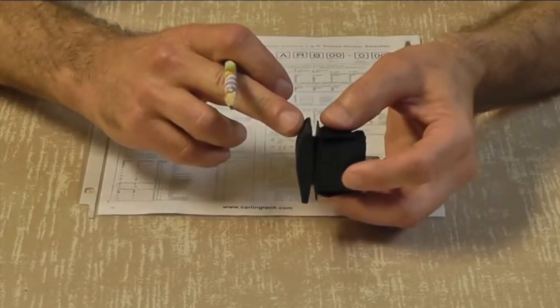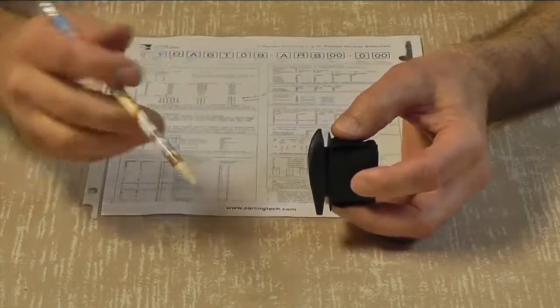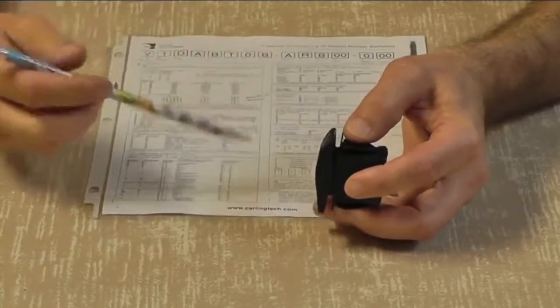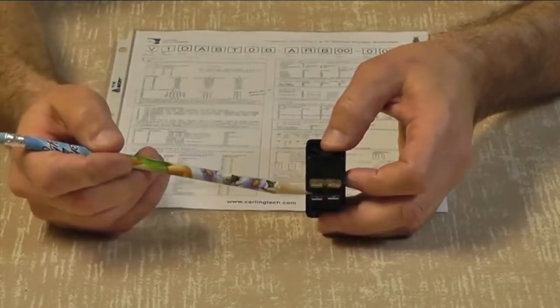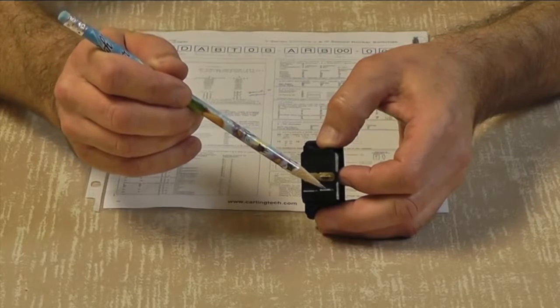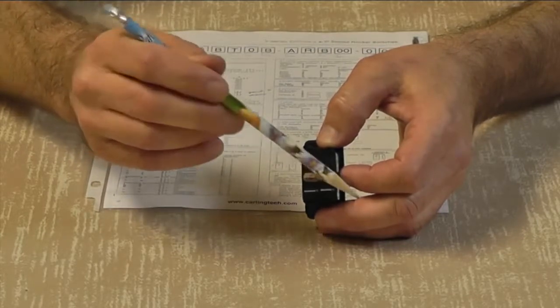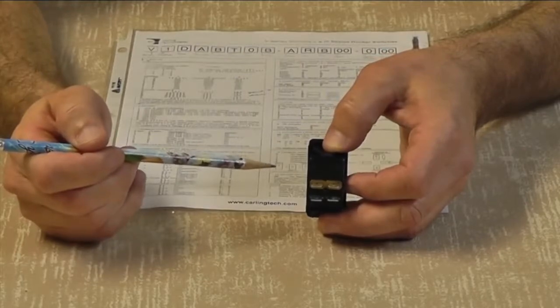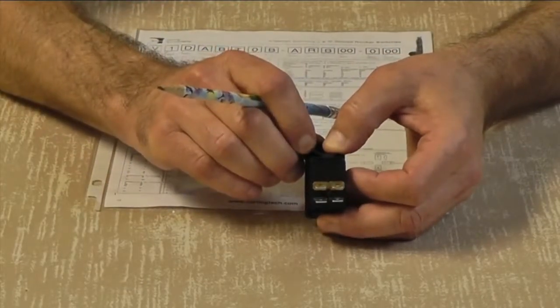When switching the actuator to position number one, you'll notice by the parentheses, it's momentary. In that momentary position, terminals two and three are connected, and also terminals five and six are connected. Terminal six is usually going to go to a starter solenoid, which is going to activate your starter. It's only momentary until the engine starts.